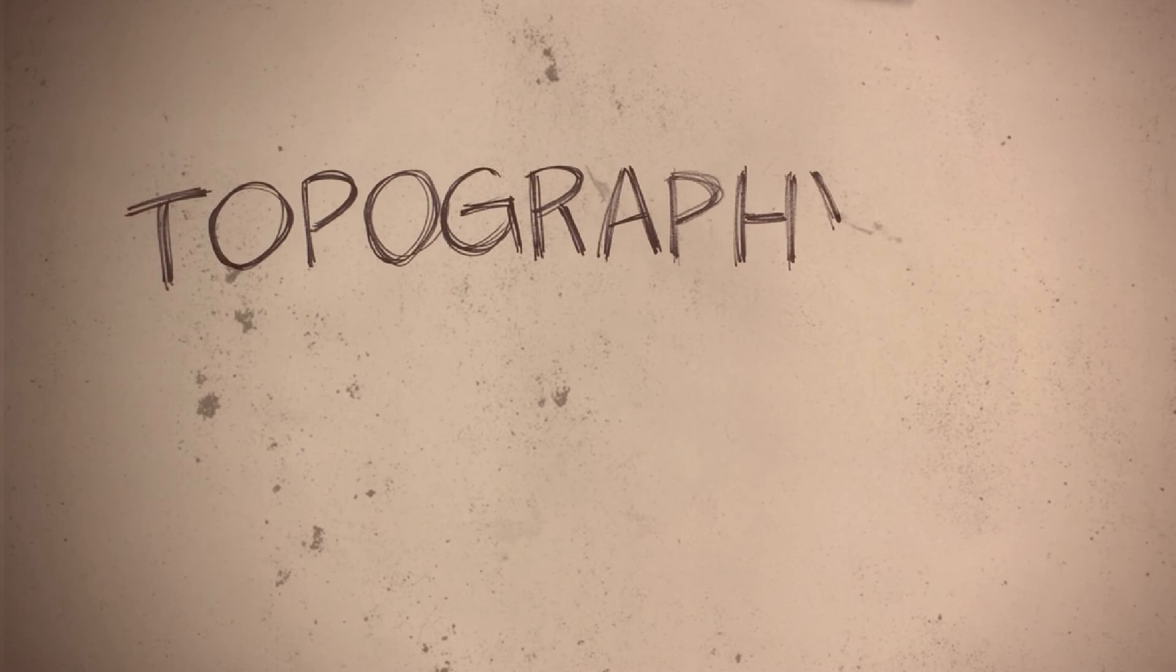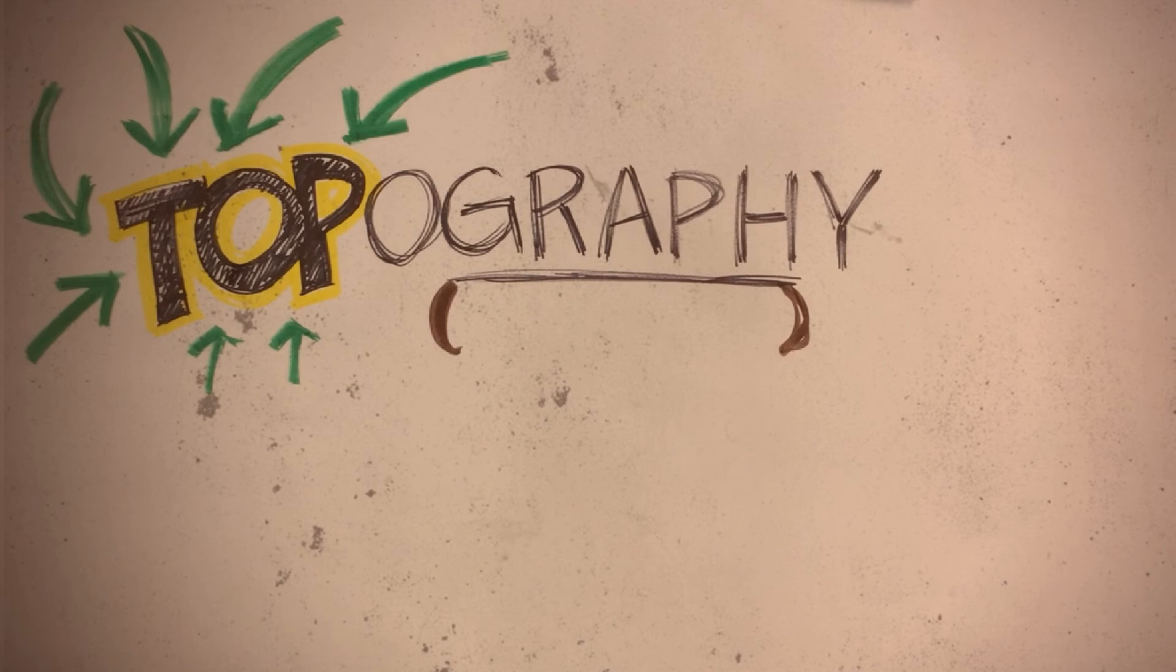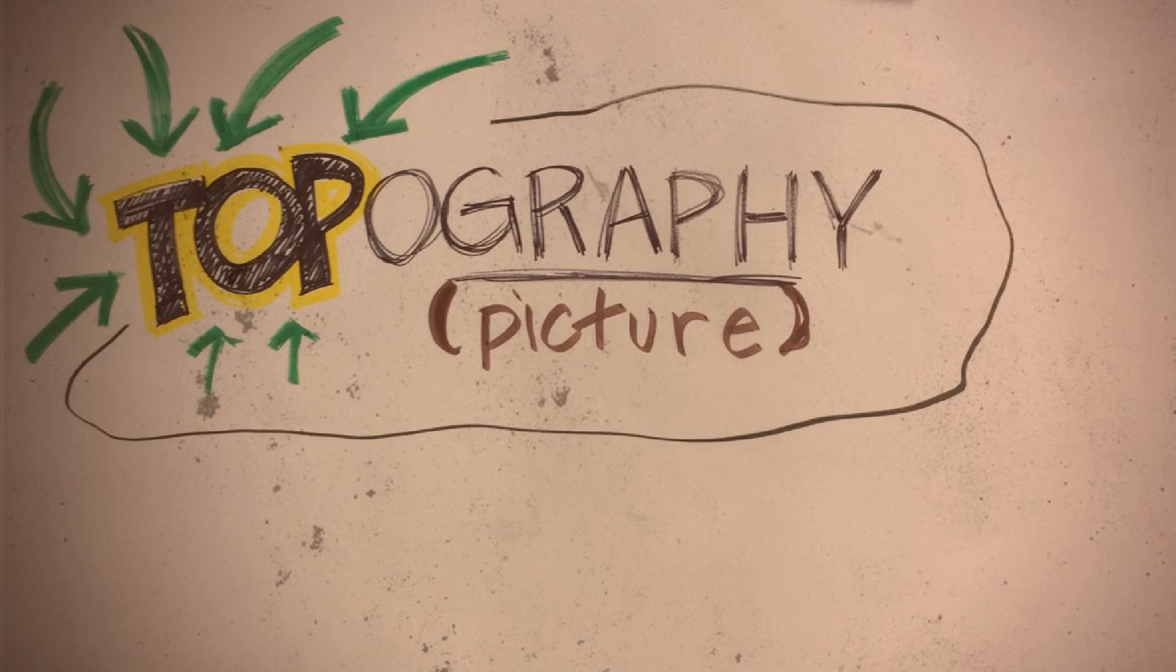When looking at the word topography, you can see two words that are recognizable. One is the word top and the other is the word graph. Top means just what it's always meant, the top of something. Graph is just a fancy word for putting information into the form of a picture.